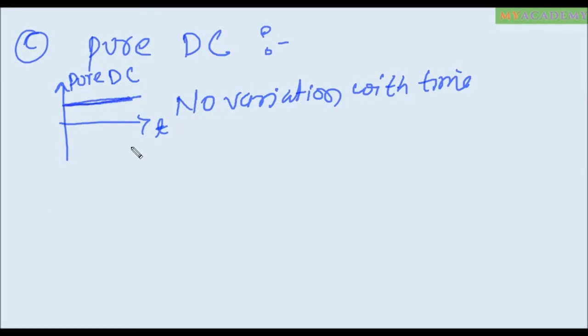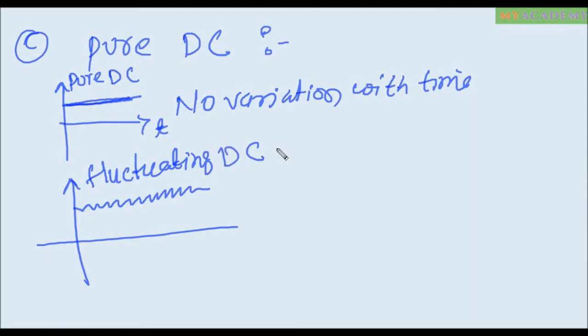Now look at time, if time is no variation. But in a practical circuit pure DC is not applicable and in a practical case the pure fluctuating DC, this is the fluctuating DC supply. This is practically used.